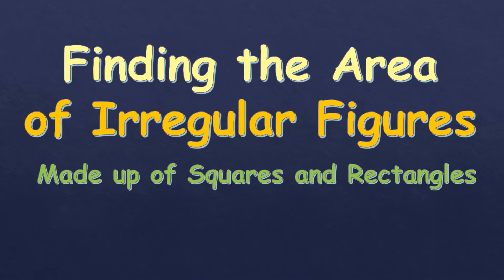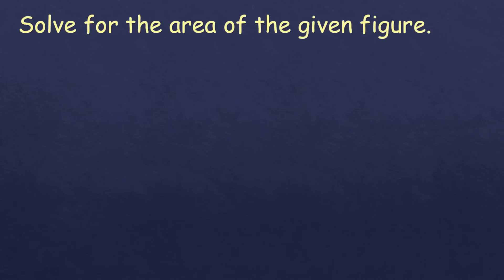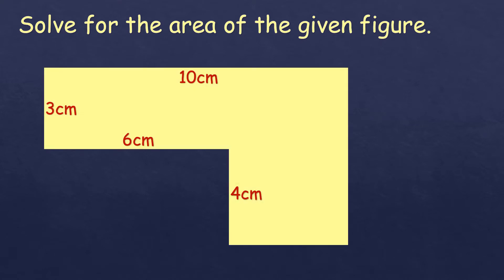In this video, we're going to talk about finding the area of irregular figures made up of squares and rectangles. Here's an example figure, and as you can see, it's not a rectangle, not a square, or even a triangle — so it's not a regular shape. That's why it's called an irregular shape.